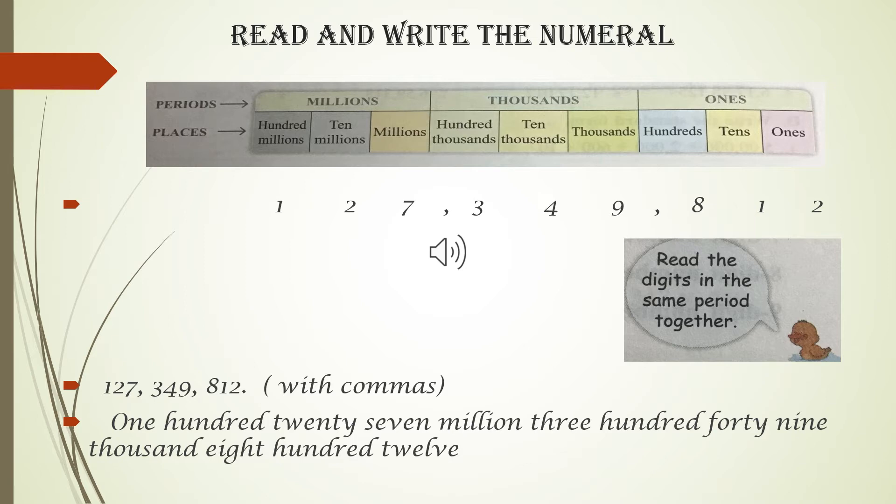Nine is in the thousands place, four in the tens thousands place, three is in the hundreds thousands place, comes under the thousands period.